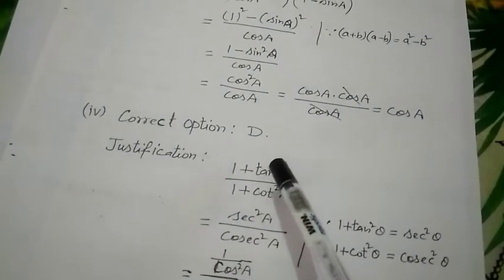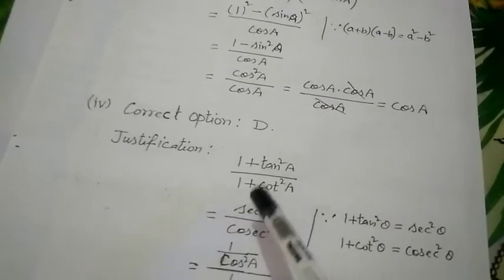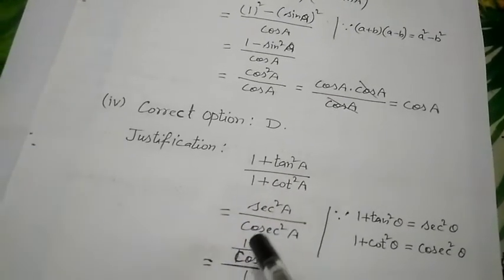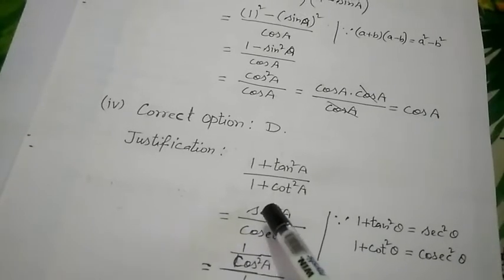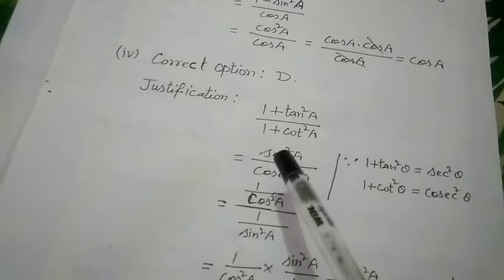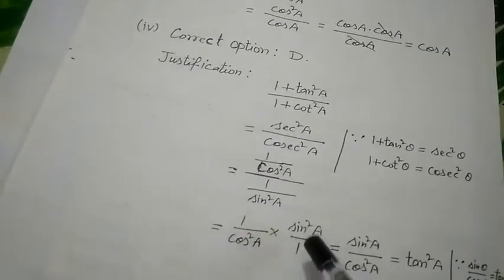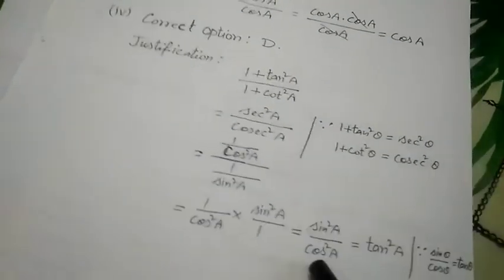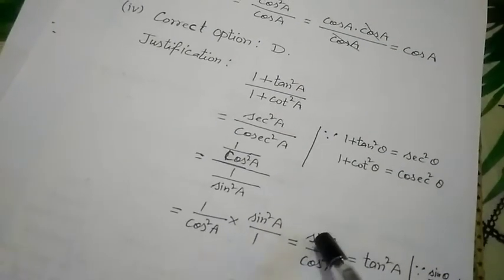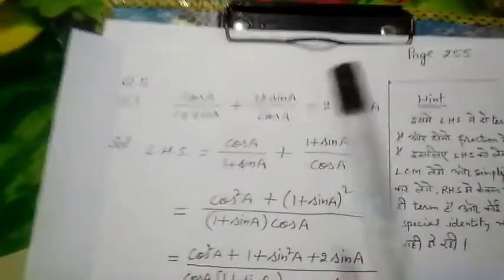For the next part, we have 1 + tan²θ. We write tan as sin/cos, so 1/cos² appears on top. Cosecant squared becomes 1/sin². The division becomes multiplication: sin²/cos², which gives sin²/cos². Separating: sin/cos is tan, then apply the square. These are the questions for this section, and now we move to Question 5.